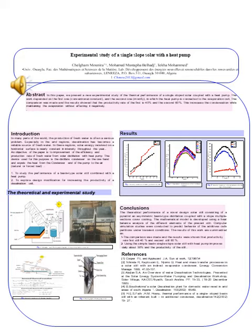Figure 4 shows the daily variation of solar radiation for the day of the experiment, including total, direct, and diffuse components. The maximum total solar radiation recorded is 1013 watts per square meter.